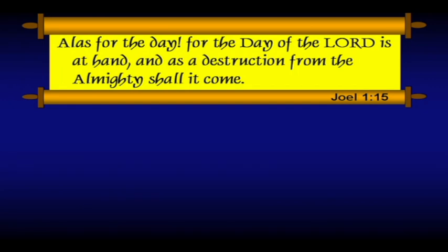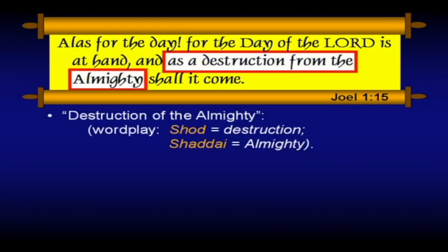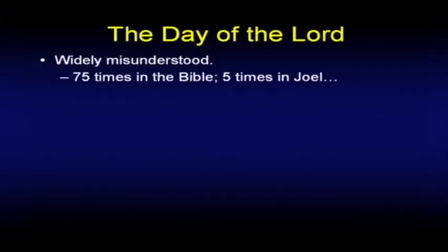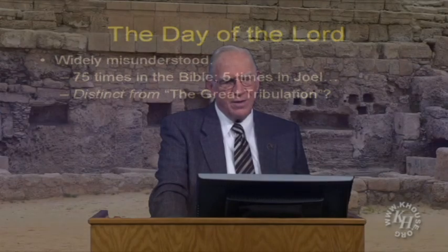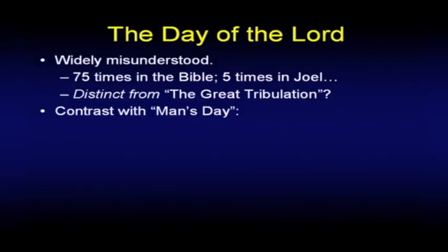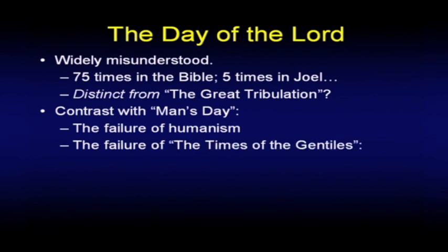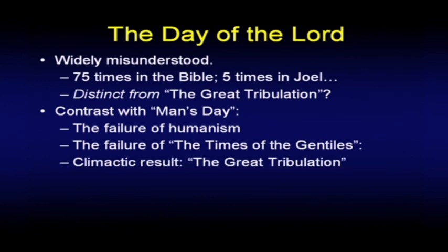Joel continues, verse 15: 'And alas for the day! For the day of the Lord is at hand, and as a destruction from the Almighty shall it come.' There's a wordplay here — shrod is destruction and Shaddai is the Almighty, El Shaddai. The day of the Lord — widely misunderstood — occurs 75 times in the Bible and five times in Joel alone. I suspect it is distinct from the great tribulation. It's in contrast with man's day, the failure of humanism, the failure of the times of the Gentiles which did start in Daniel chapter 2. The climactic result of all of this is then the great tribulation — and God has to intervene to save some flesh.